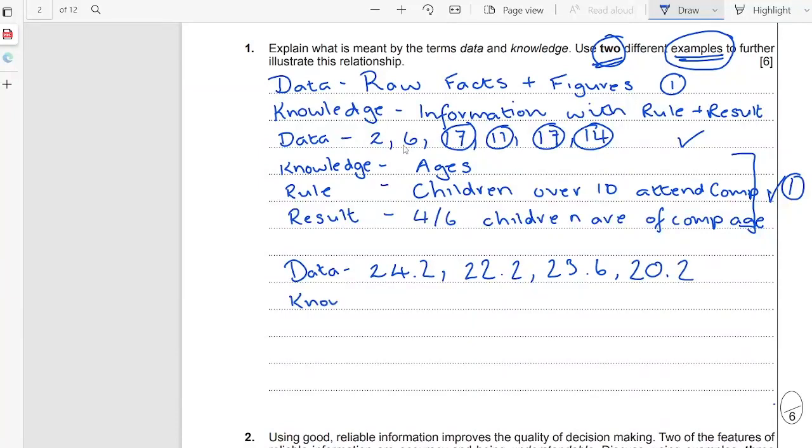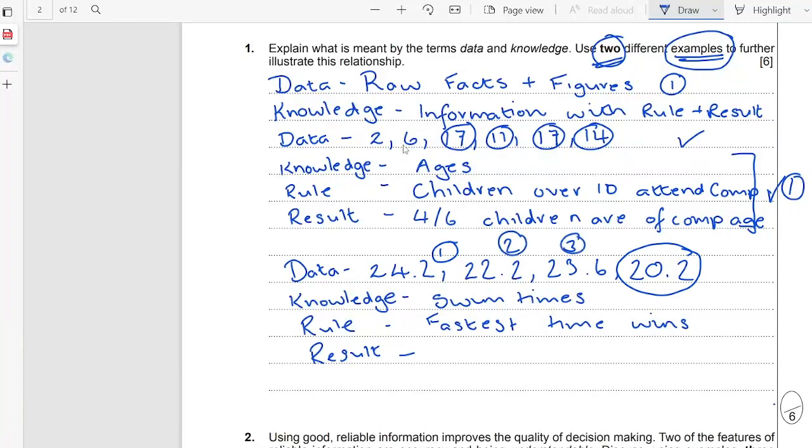All right, so our knowledge. We are going to say that these are swim times. Rule, result - fastest time wins. And then the result, so we have a look which one's the fastest, so that's swimmer four. Swimmer four won.